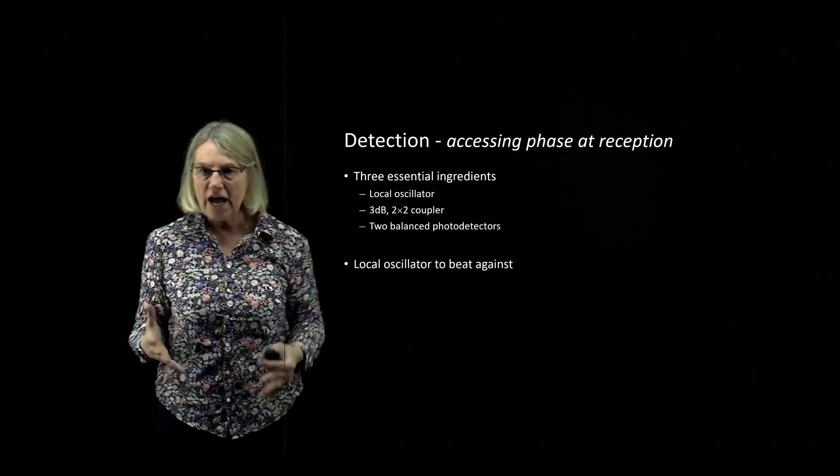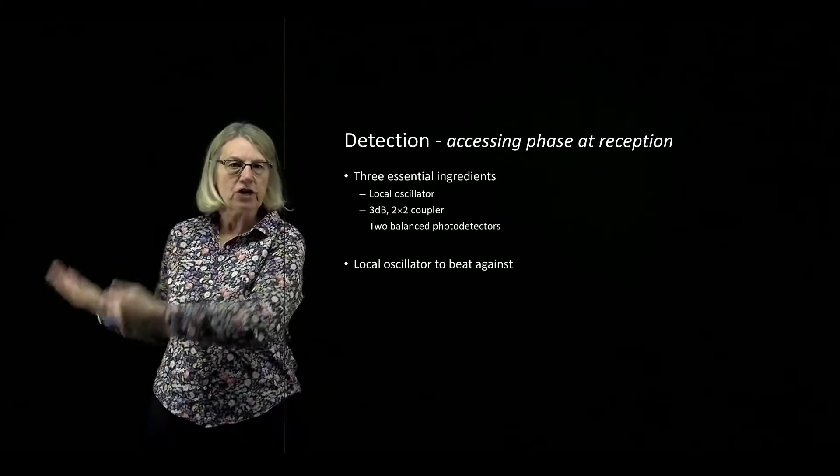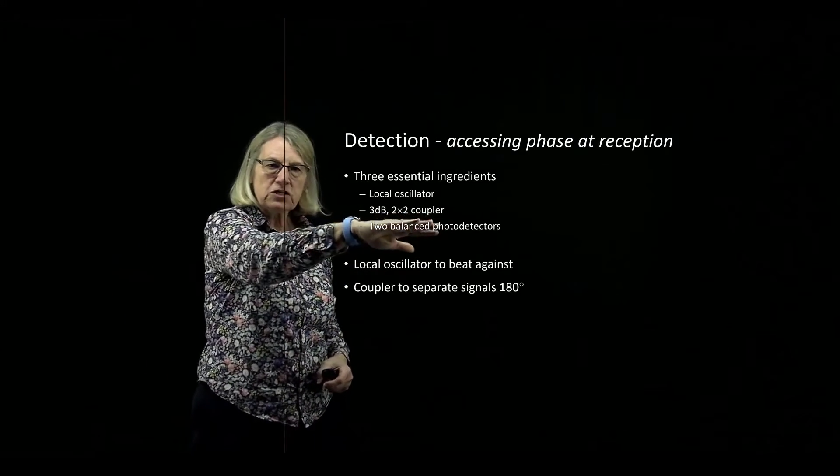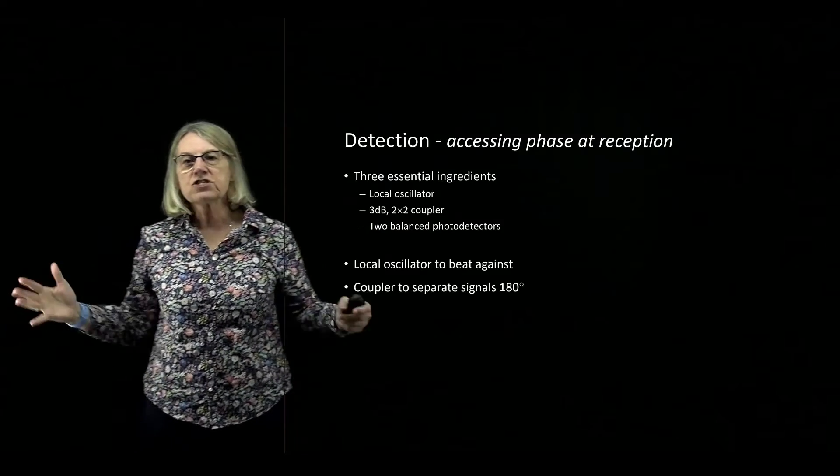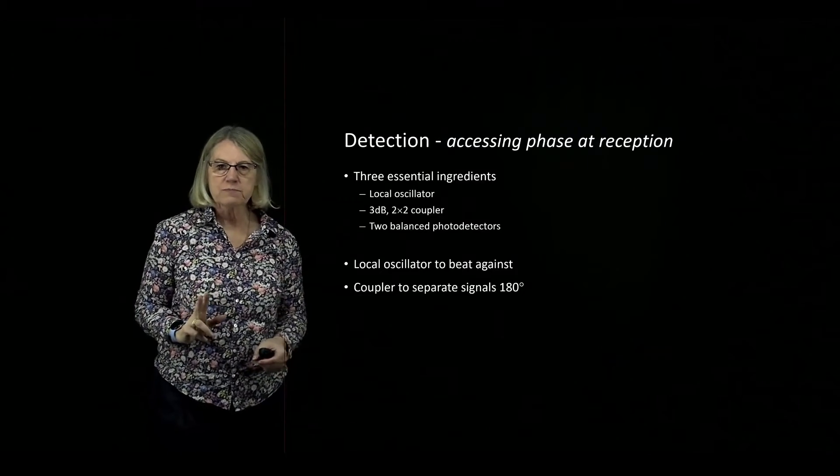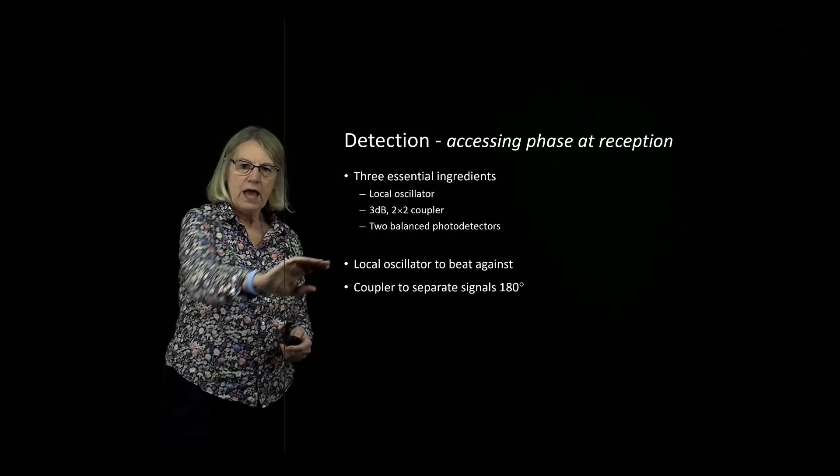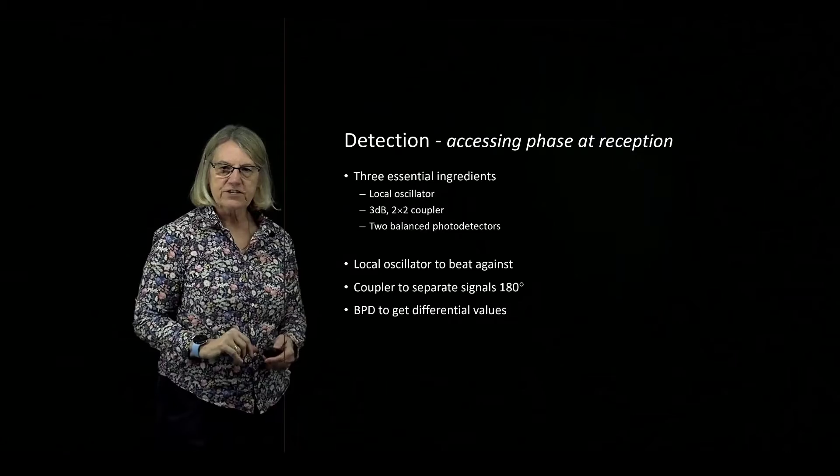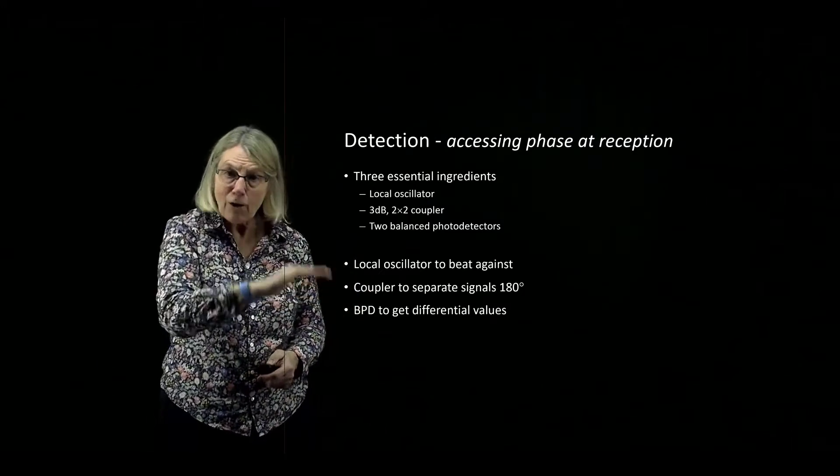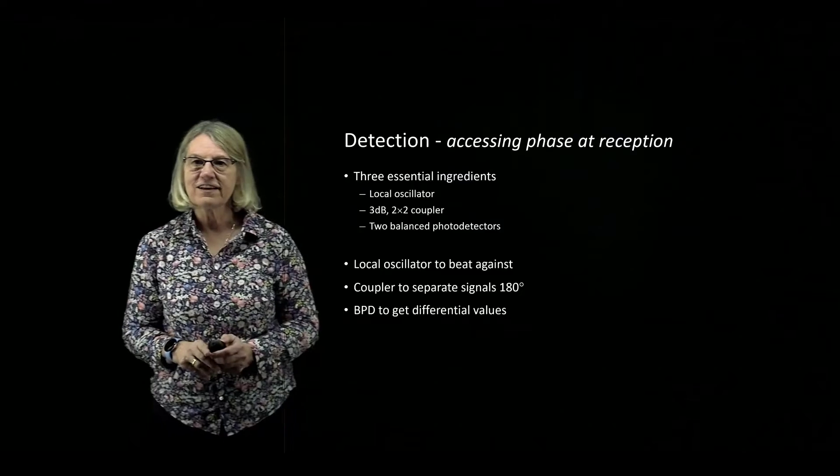We have the local oscillator which we're going to use to beat against our incoming signal. Local oscillator is just another laser located at the receiver. I'm going to use a 2x2 coupler, a 3dB 2x2 coupler, and I'm going to use this not just to equally divide power between the outputs but I'm also going to use it to separate signals with a 180 degree rotation. And then finally I'm going to be using balanced photodetectors to get a differential value for photodetectors. So let's see how is it that these three essential ingredients, how do I use that in order to actually access the phase at the receiver?